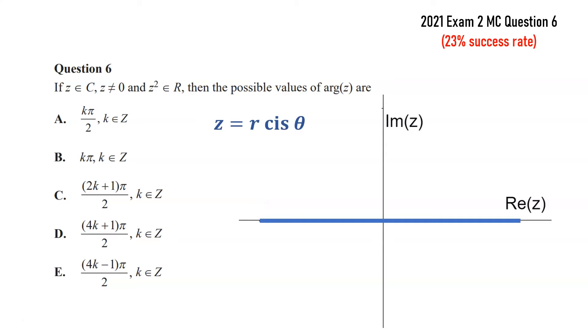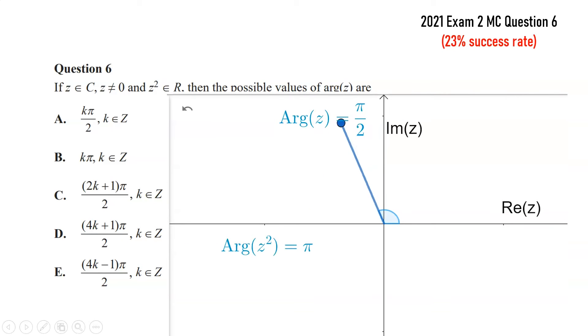So if we say that z is, for example, r cis theta, when we square that, we end up doubling the angle. So that tells us that the arg of z² should be double the argument of z. Okay, so by doubling an angle, we need to end up somewhere on this real axis. So it could be, for example, that we start with somewhere with an argument of π/2, when we double it, we get an argument of π.